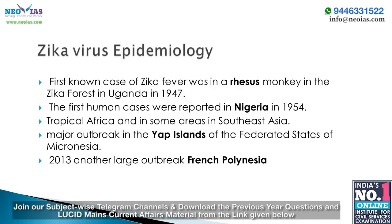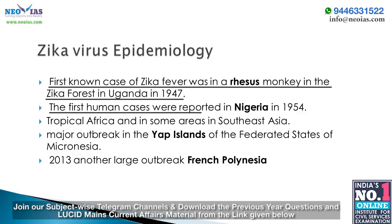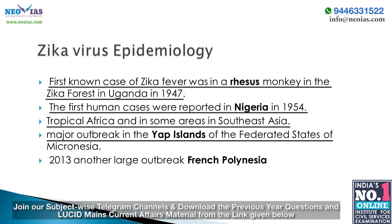Regarding Zika virus epidemiology: the very first known case of Zika fever was in a rhesus monkey in the Zika forest in Uganda in 1947. The first human cases were reported in Nigeria in 1954. A few outbreaks have been reported in tropical Africa and Southeast Asia. The first major outbreak with 185 confirmed cases was reported in 2007 in Yap Islands of the Federated States of Micronesia.